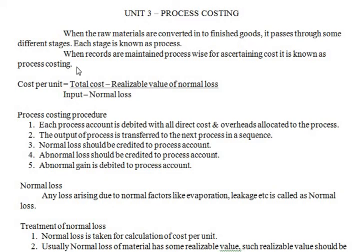Welcome to Costing Methods and Techniques. Today we start Unit 3, which is process costing. When raw materials are converted into finished goods, they pass through three to four stages. Each stage is known as a process. When we maintain records process-wise, it becomes process costing.